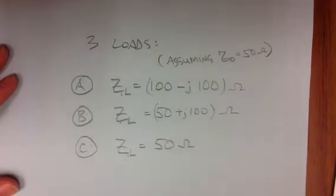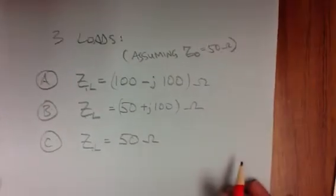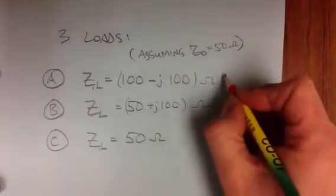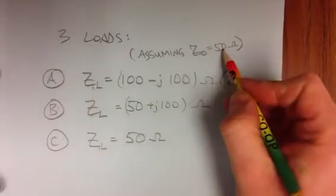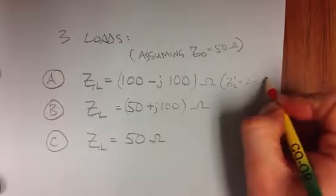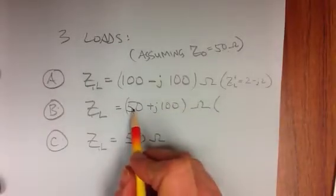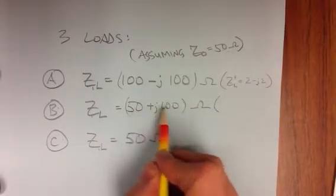Okay, so for the first load, I can say the normalized impedance, if we divide by characteristic impedance, is 2 minus J2. In this one, 50, so 1 plus J2.